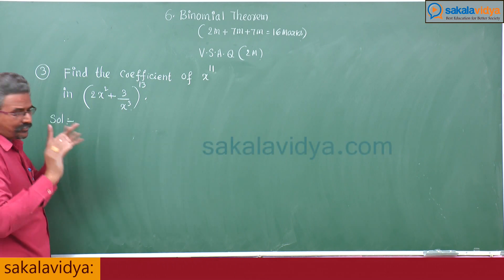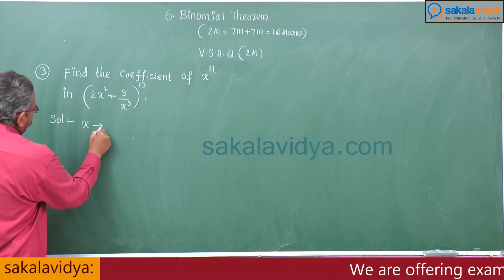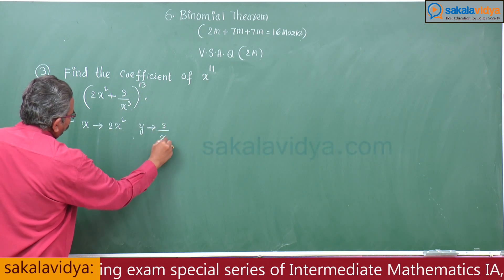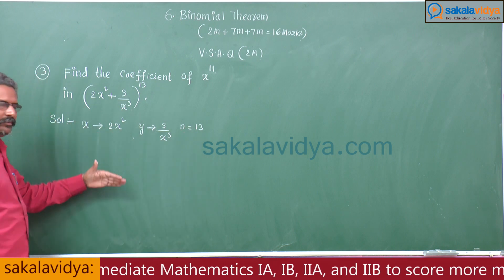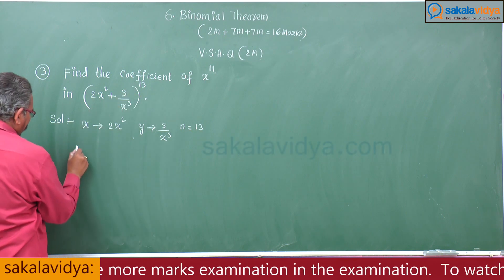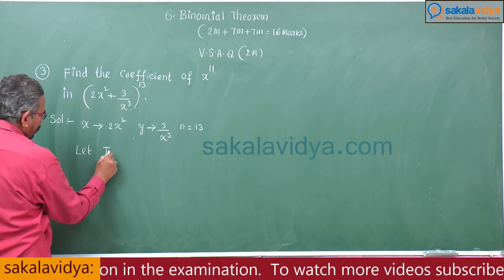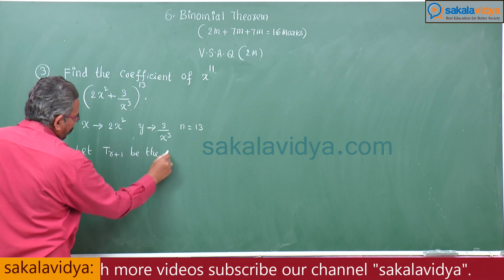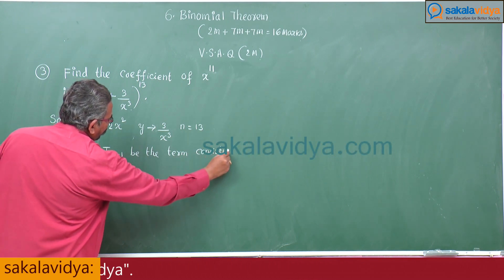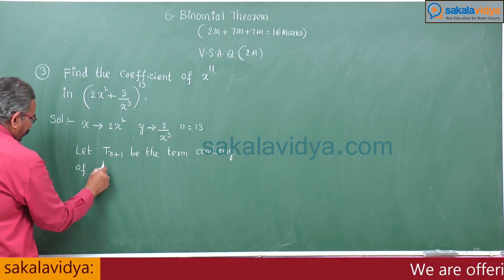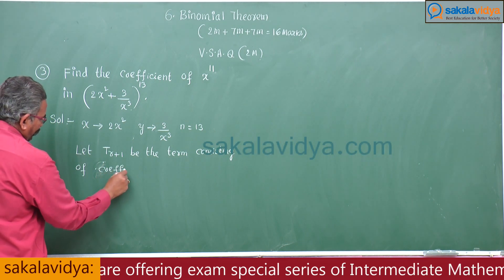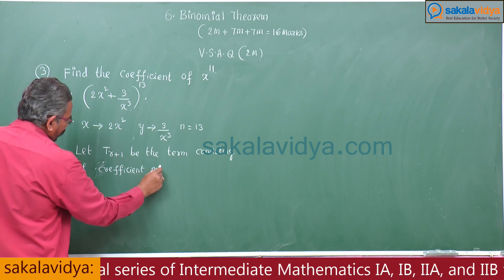The first step is always the same for all problems: x is 2x², y is 3/x³, and n is 13. For each and every problem, the first step is the same. Now, let T(r+1) be the term consisting of the coefficient of x to the power of 11.